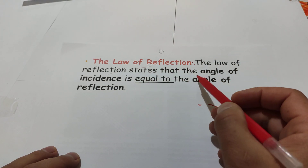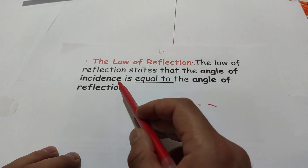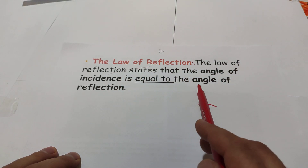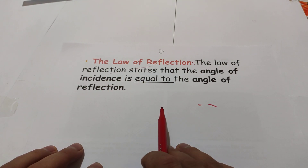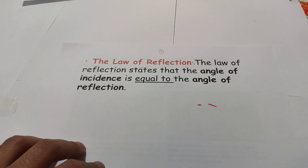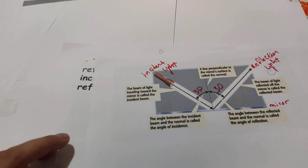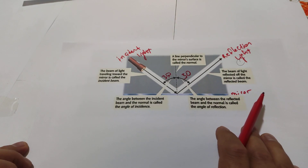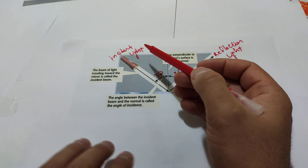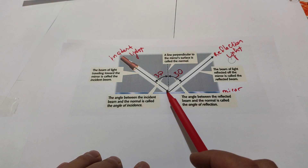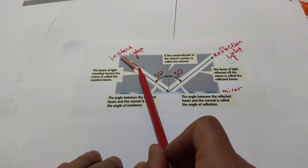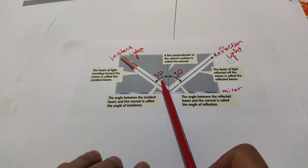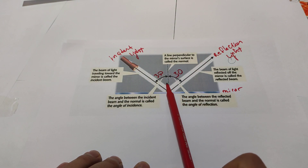The law of reflection states that the angle of incidence is equal to the angle of reflection. What is the meaning of the angle of incidence and the angle of reflection? I have one example here. This is a light coming to the mirror and reflected. The light which is coming, we call that light the incident light.